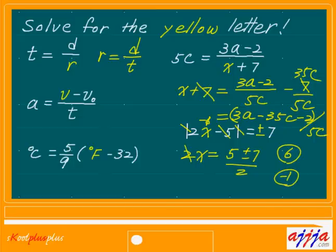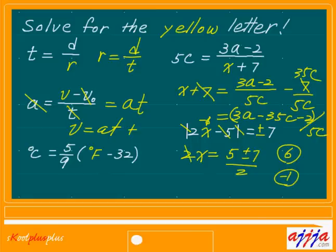The left-hand side — scratch this one, move this one to my right-hand side. Divide by t, now times t right there: at. I scratch this one, then plus v0. So v equals at plus v0, which is the initial velocity. Usually written as v equals v0 plus at — you're going to see this one somewhere.